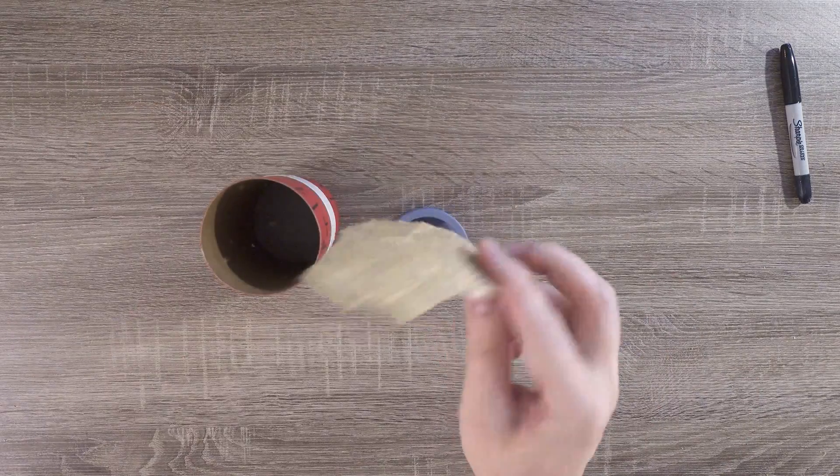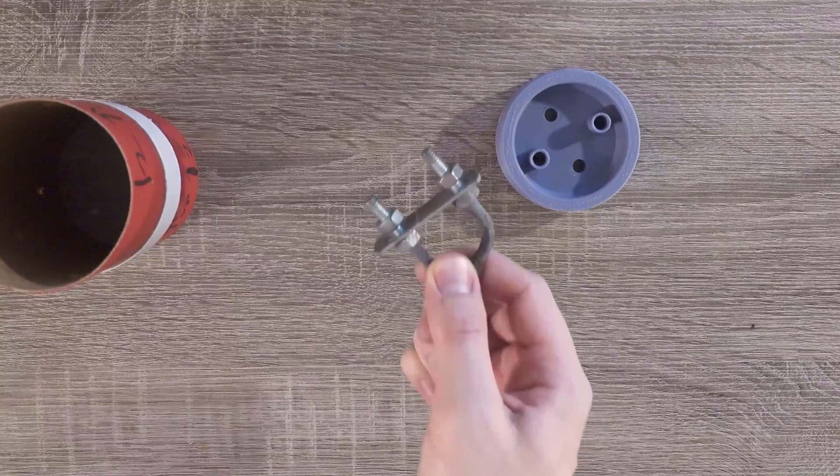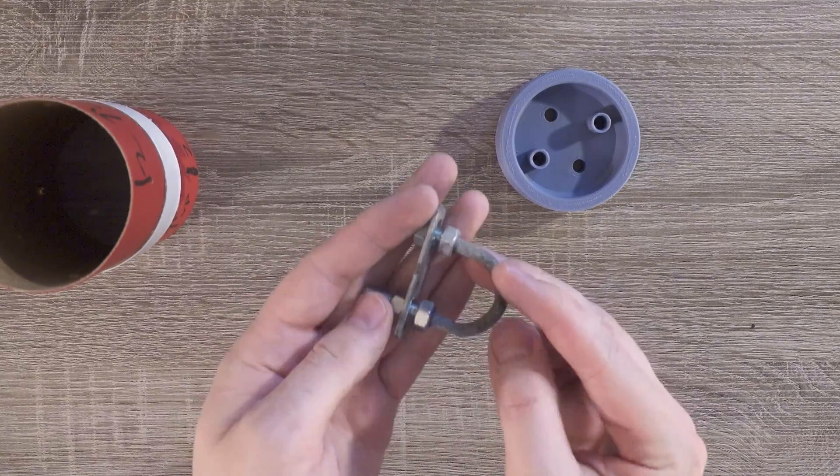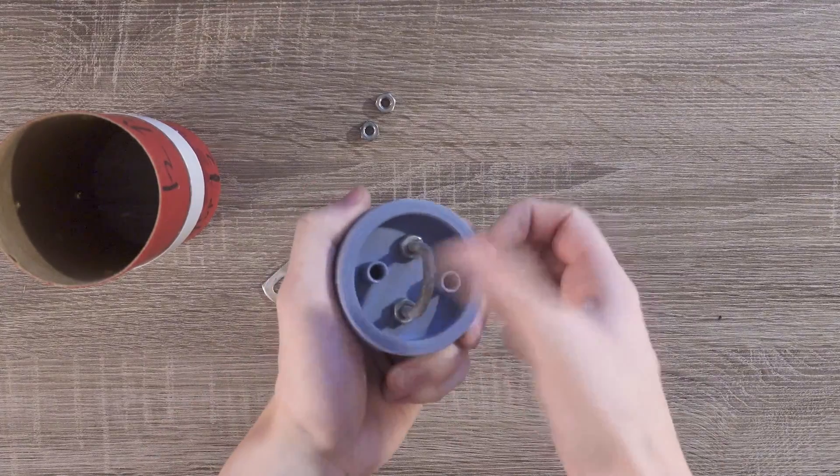Starting with the coupler bulkhead, we're going to sand the edges that need to be glued so they stick a little better. Next we'll secure a U-bolt to the coupler bulkhead. This part needs to be metal because it sustains a whole lot of shock. The rocket's going to be hanging from this on the way down.